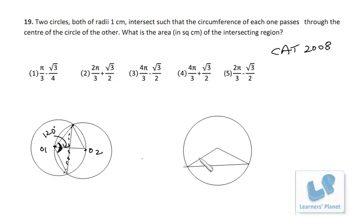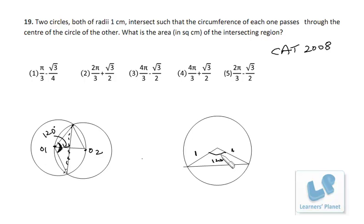We have already calculated that the central angle is 120 degrees, and the radius is 1. The area of this sector O-A-B will be one third of the entire circle, since 120 degrees is one third of 360 degrees. So the area of sector OAB equals one third times π times r squared, which equals π/3, since r = 1.